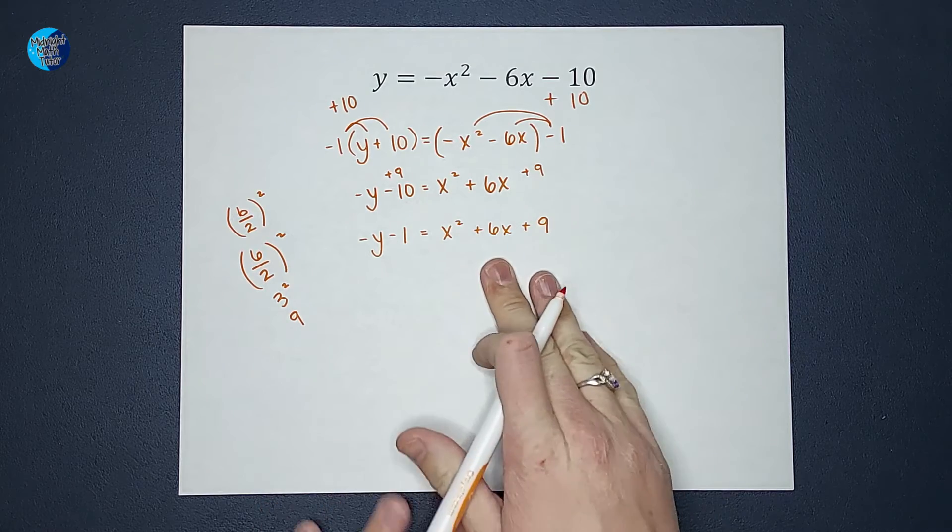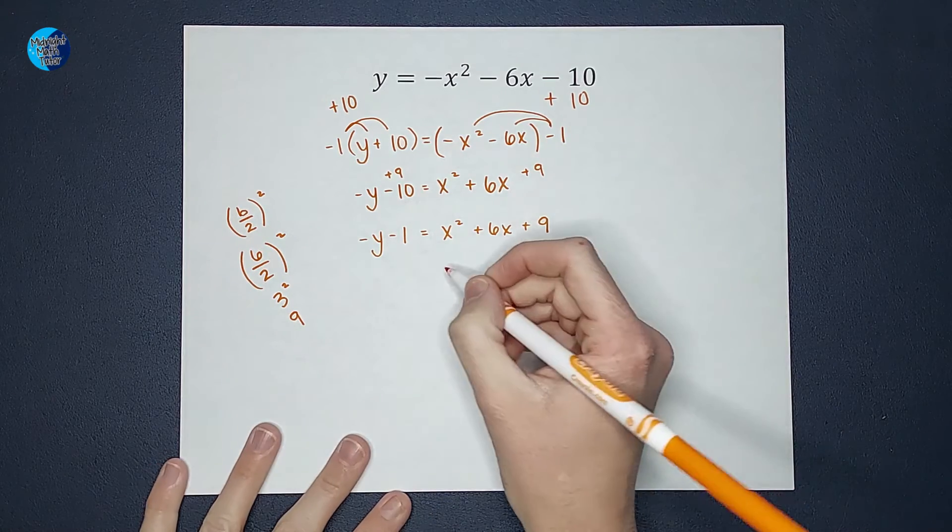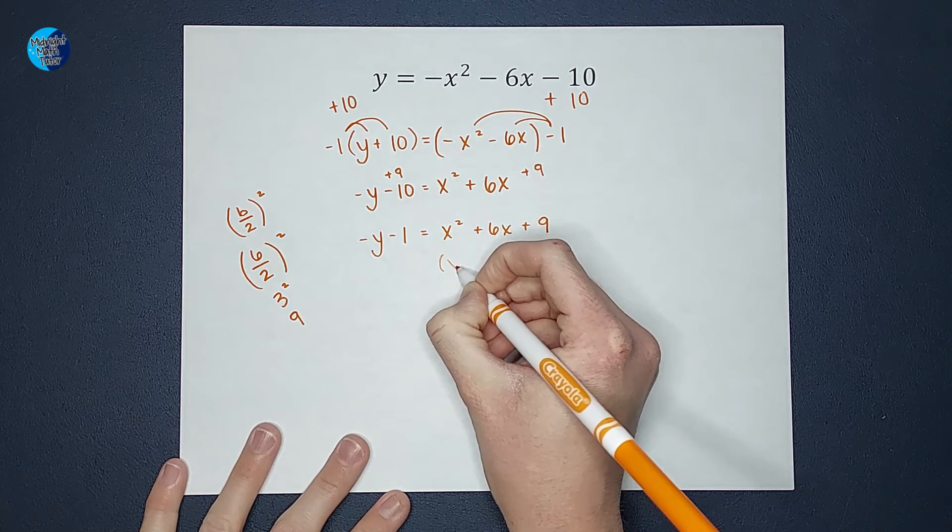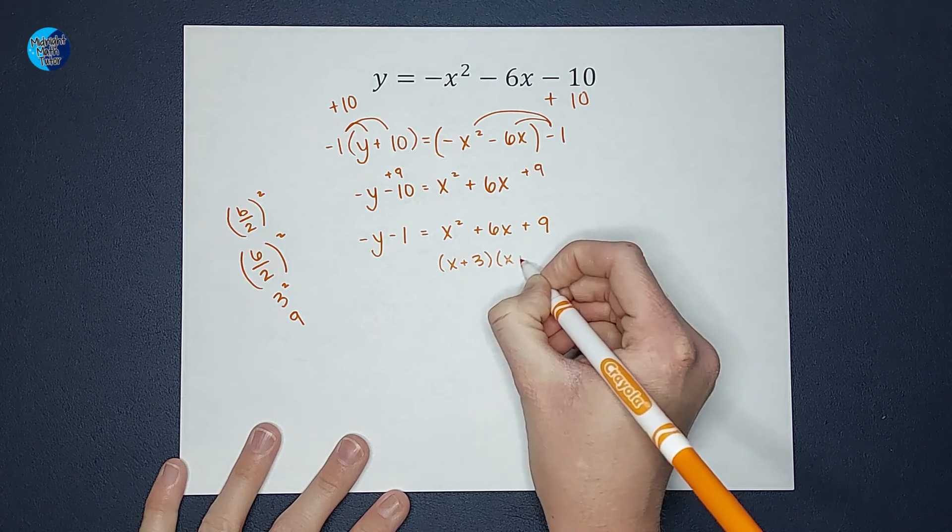Now I want to factor this side. Now because I know this is completing the square, I know this is going to factor to x plus 3 times x plus 3.